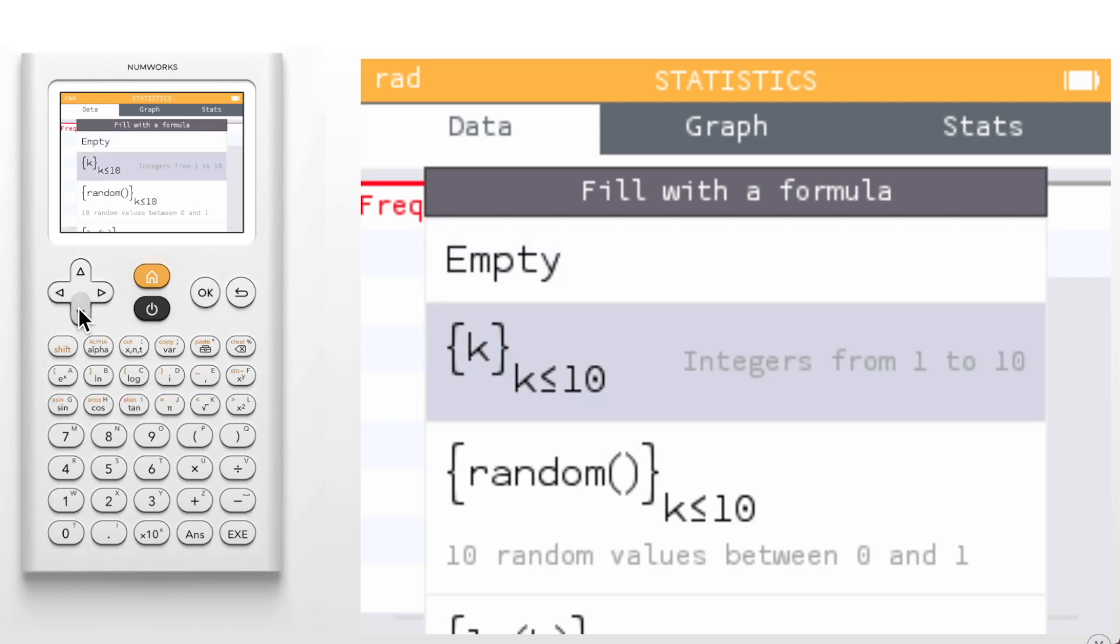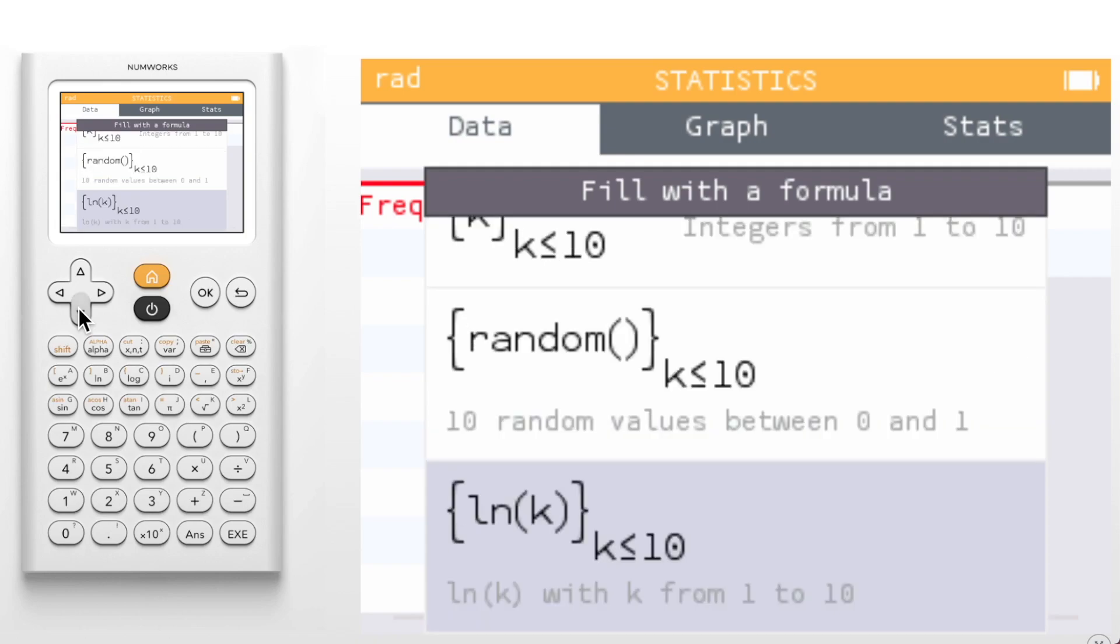We see a few templates here that we can choose from. The first template will generate a list of integers from 1 to an indicated upper bound. 10 is shown in the example, but we can choose any upper bound. The next template uses the random function to randomly generate numbers between 0 and 1. Again, we can select how many numbers to generate. Then we have a template that will fill our table with the values of the natural log of k, where k varies from one to an upper bound. These are not the only functions we can choose though. We can replace natural log of k with any function or expression we'd like. So for example, k squared or sine of k.